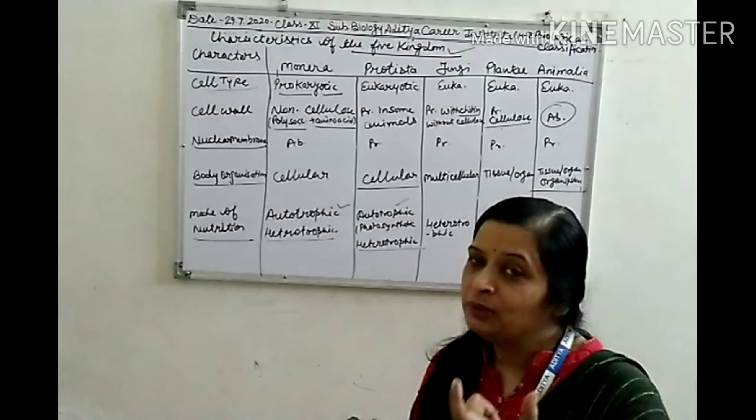The third character is nuclear membrane. In Monera, the nuclear membrane is absent because prokaryotic cells are present here. In Protista, Fungi, Plantae, and Animalia, nuclear membrane is present in all these kingdoms.